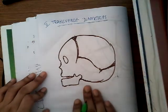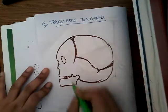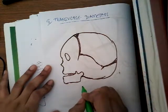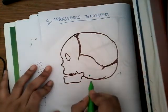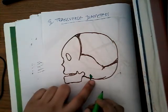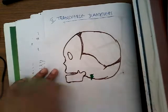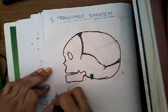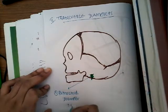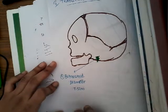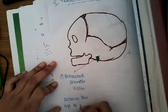The first diameter — which is least important — is the bimastoid diameter. We have both mastoid processes behind the ear. The bimastoid diameter is the distance between the tips of the two mastoid processes, and its length is 7.5 centimeters.